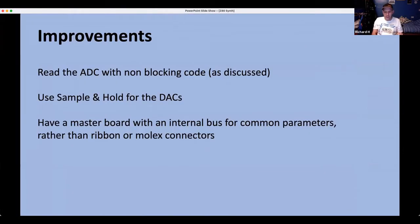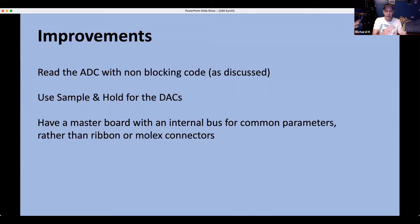For improvements, Richard is currently designing his next machine — slow progress due to cost — based on the Prophet 5. He is using non-blocking ADC reading with an end-of-conversion flip-flop, sample-and-hold from DACs rather than individual DACs, and a big master board with a bus connection for all common parameters rather than ribbon and Molex jumpers between each analog voice board.